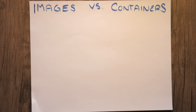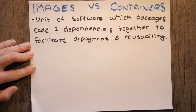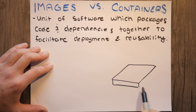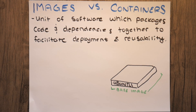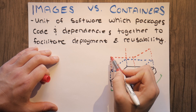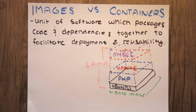An image is a unit of software which packages code and dependencies together to facilitate the deployment and reusability of the software we are deploying. Every image that we build is going to have a base image — this could be a Linux distribution like Ubuntu. For example, if a customer wants the LAMP stack pre-configured — Linux, Apache, MySQL, and PHP — we can install this software within our image, and each piece of software adds another layer. The conglomeration of all these pieces forms our custom LAMP image, which we can distribute amongst different developers across different servers and environments.